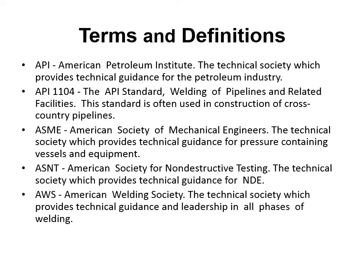Key terms and definitions: API — the American Petroleum Institute — is a technical society providing guidance to the petroleum industry. API 1104 is the API standard for welding of pipelines and related facilities, used in cross-country pipeline construction. ASME — the American Society of Mechanical Engineers — provides guidance for pressure-containing vessels and equipment. ASNT — the American Society for Non-Destructive Testing — provides guidance for non-destructive examination. AWS — the American Welding Society — provides guidance in all phases of welding.